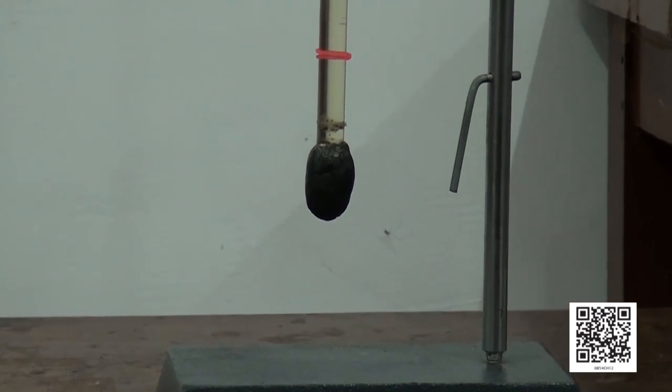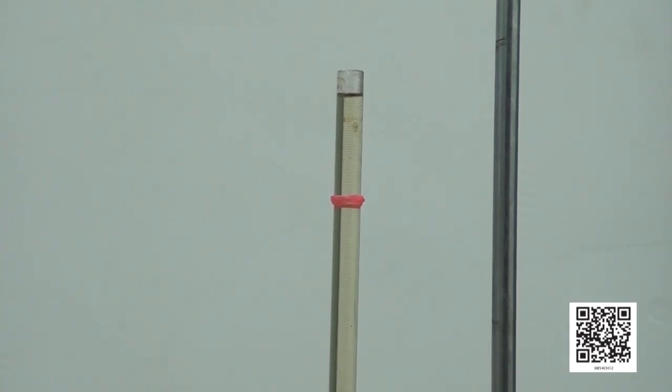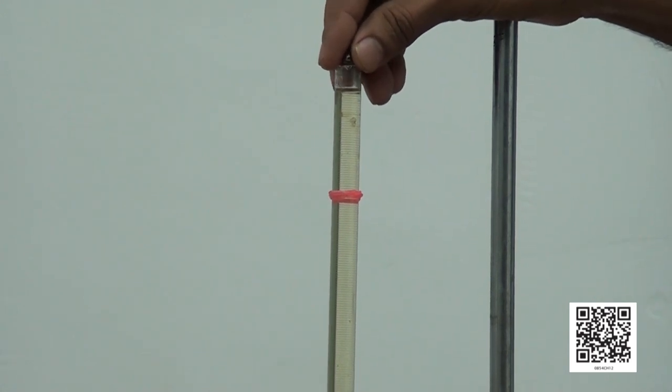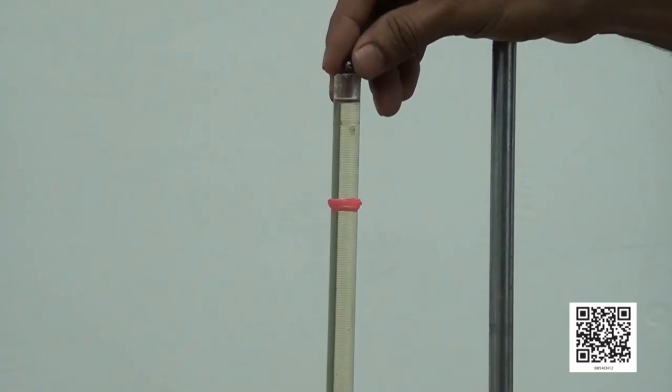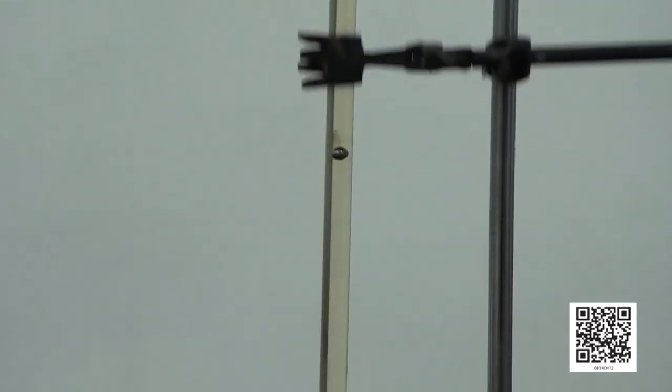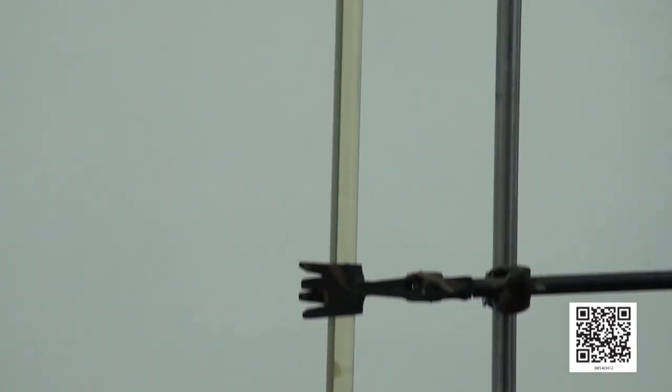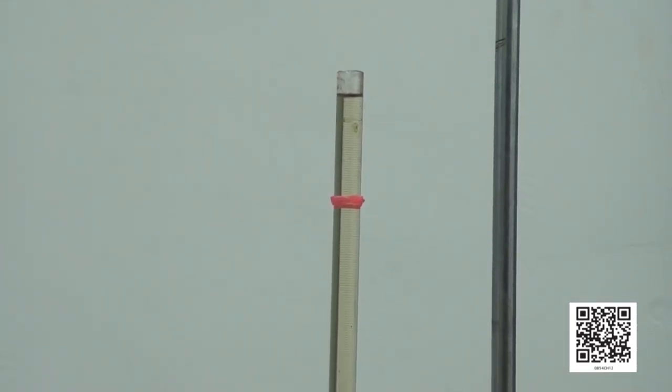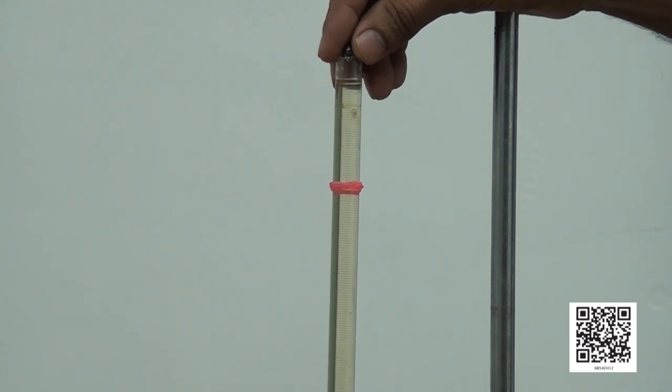Now, let us discuss about the factors that affect the fluid friction. Suppose, I use some thick oil, thicker than what we used here. If I drop the same metal ball in such a liquid and measure the time required to travel the same distance, will it be the same? No. It will be more. What do we understand from this? We understand that the fluid friction depends upon the nature of fluids. By nature of the fluid, we mean how thick the fluid is. So, the first factor that affects the fluid friction is the nature of the fluid.